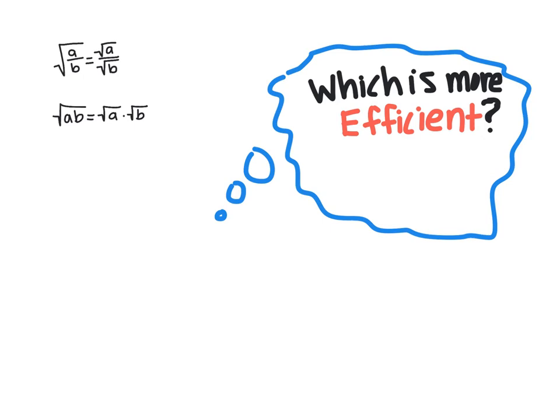Many problems have multiple ways to reach the same answer, so you always want to ask yourself, which is more efficient? Separate radicals or one radical?